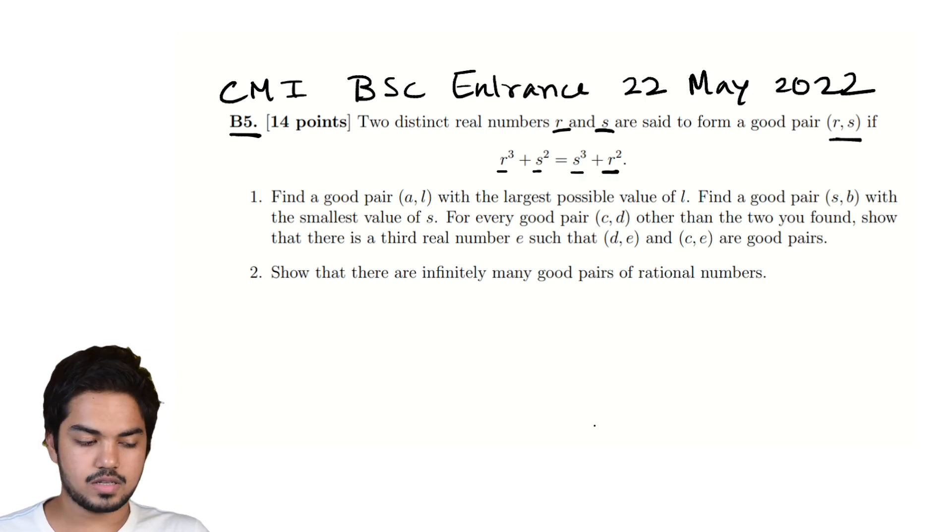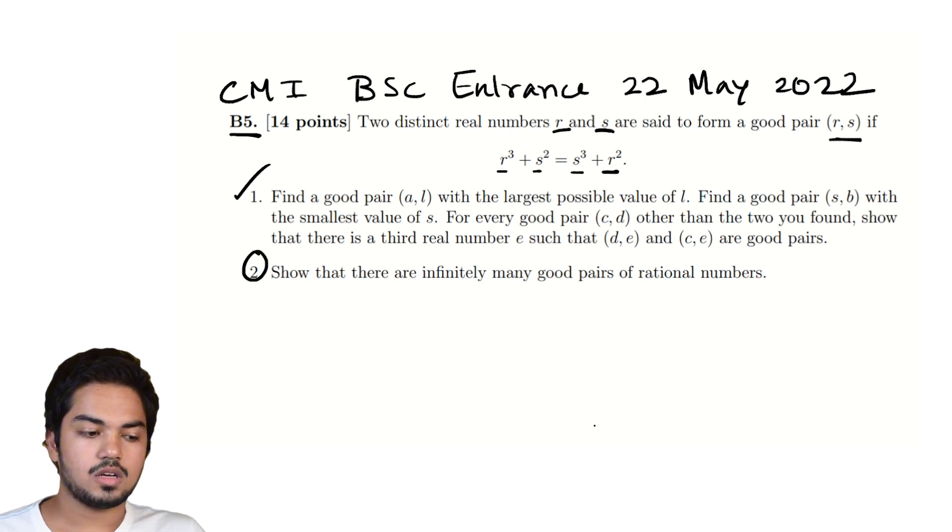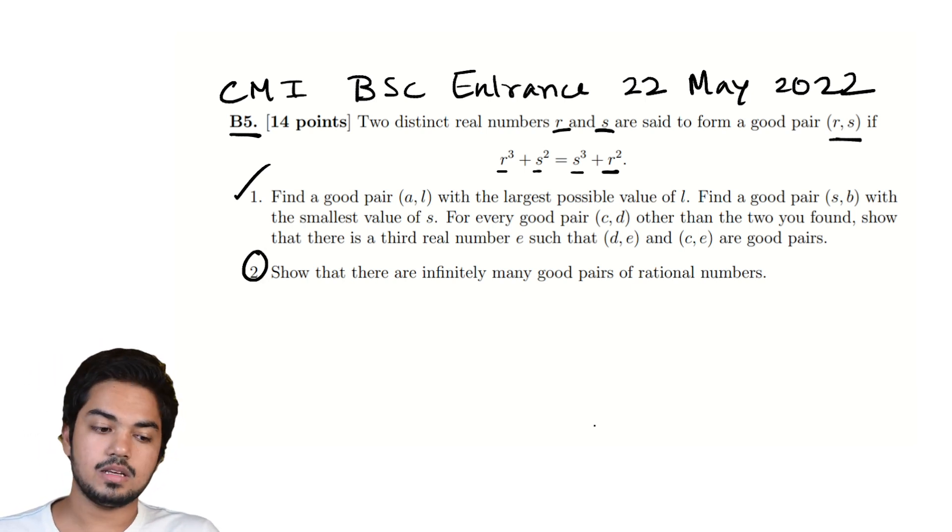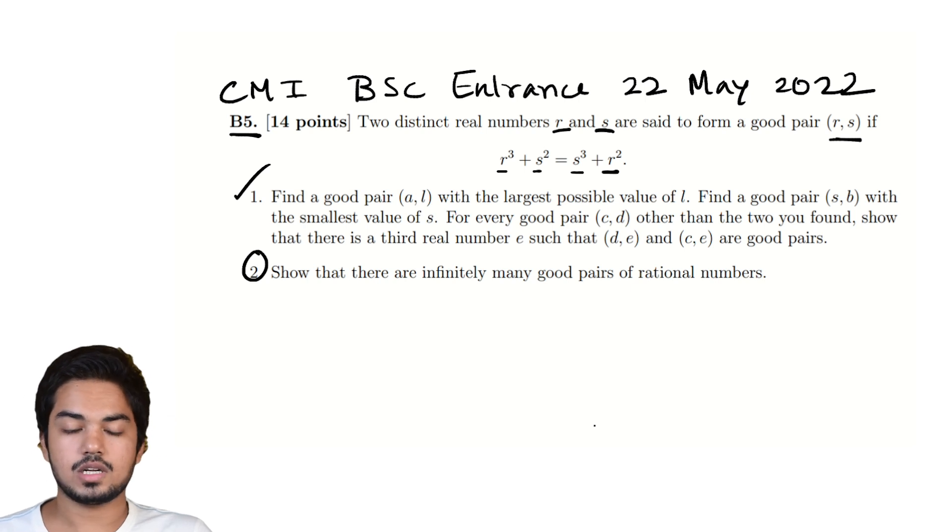There's some stuff that needs to get done in the first part but really one could think of the final act of the problem as question 2, which is to show that there are infinitely many good pairs of rational numbers.